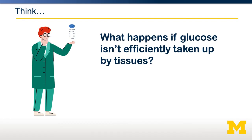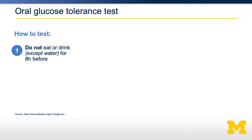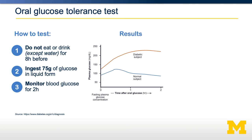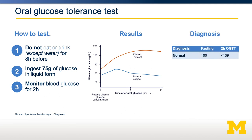So what happens if glucose is not effectively taken up by our tissues? After a meal, it stays in our bloodstream. This can have devastating consequences and is diagnosed by an oral glucose tolerance test. The participant is told not to eat or drink anything except water for at least 8 hours before. They then ingest 75 grams of glucose in liquid form, and their blood glucose levels are monitored for 2 hours. In a normal subject, there is a transient increase in blood glucose which then declines as glucose is transported out of the blood by insulin-stimulated GLUT4 translocation. However, in the diabetic subject, glucose levels rise and stay elevated for a long period of time. The American Diabetes Association sets guidelines for cutoffs to diagnose somebody as pre-diabetic or diabetic, depending on blood glucose levels at fasting and 2 hours after the start of the oral glucose tolerance test.